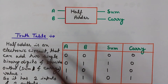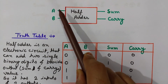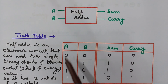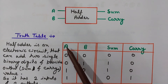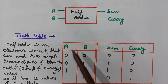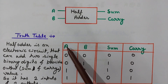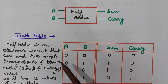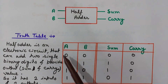Now we will see the truth table of the half adder. The half adder has two inputs A and B and two outputs: sum and carry. Since A and B are each binary digits that can be either 0 or 1, there are four combinations: 0-0, 0-1, 1-0, and 1-1.